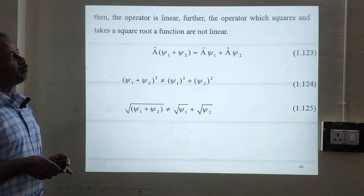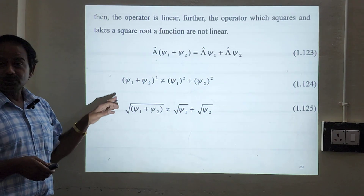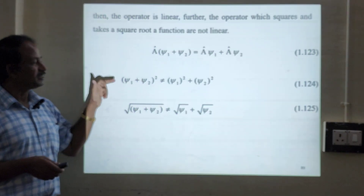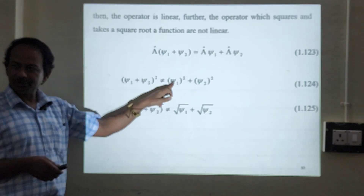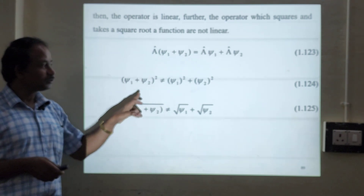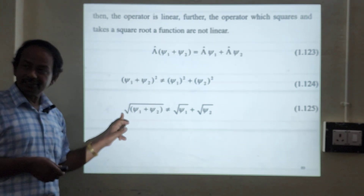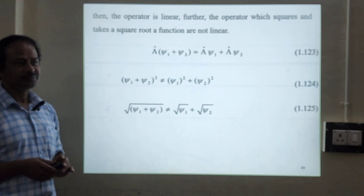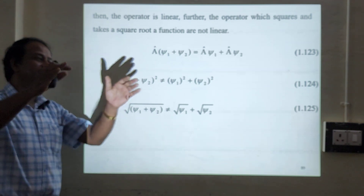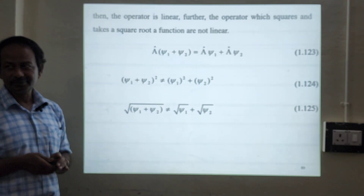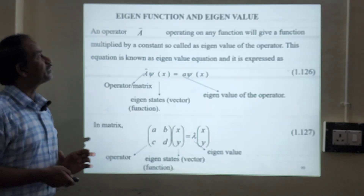Then the operator is linear. Further, the operator which squares is not linear. For example, (psi1 + psi2)² is not equal to psi1² plus psi2². So squaring is not a linear operator. Similarly, taking the square root is also not a linear operator. So it is not obvious that every operator will be linear — squaring and taking the square root are not linear operators.